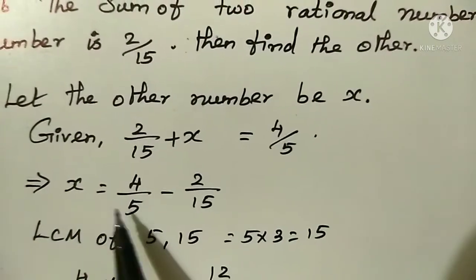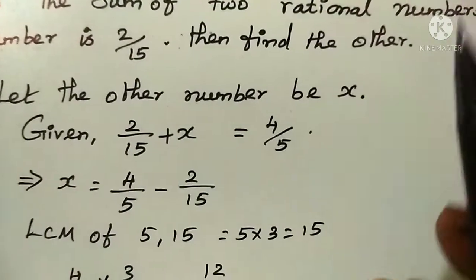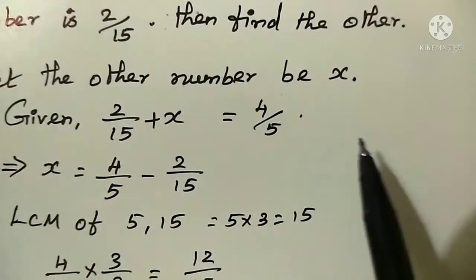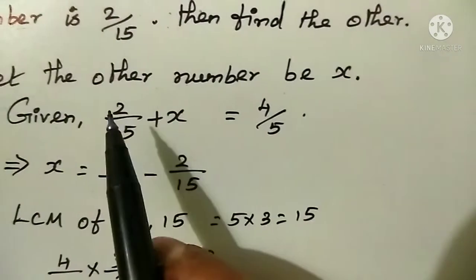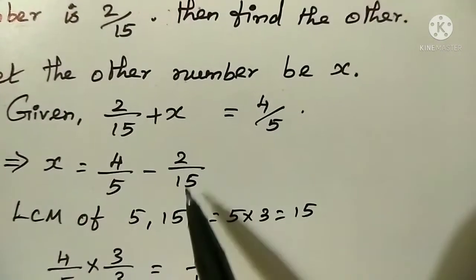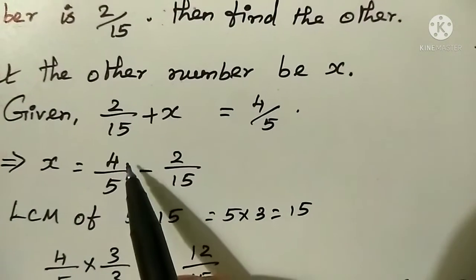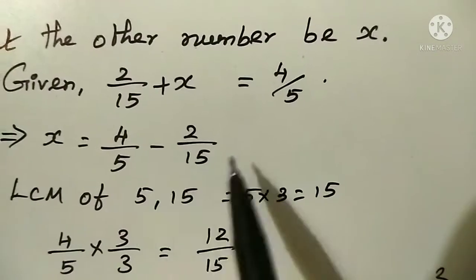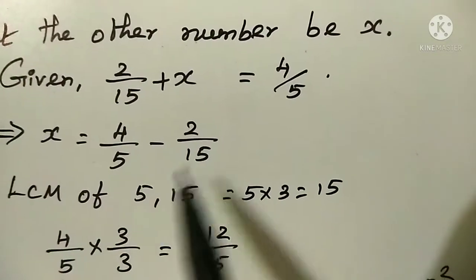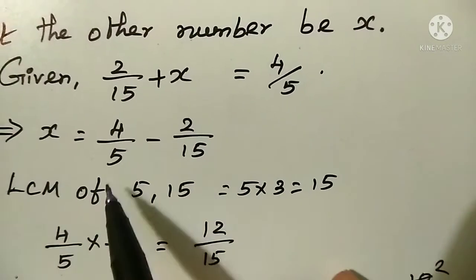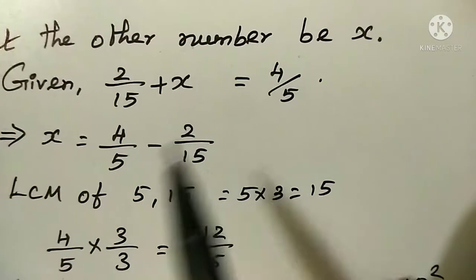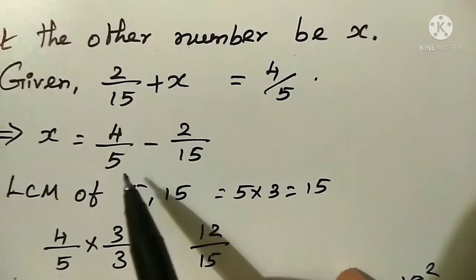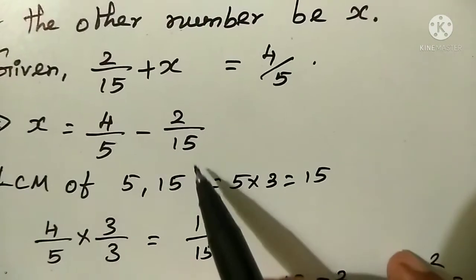So, x is equal to 4 by 5 minus 2 by 15. The denominators are different, so these are unlike fractions.